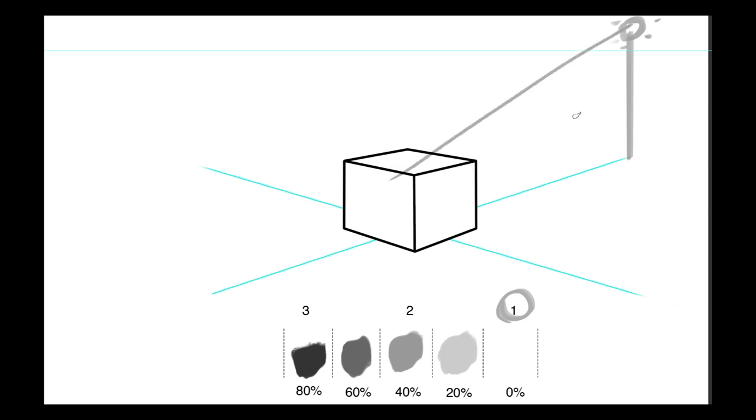A 2 would be a side of the cube, like this one right here, that is running parallel with the light ray. It's not going to receive a direct impact, but it's going to get some light. It's going to be lit just from being in the environment, and that's going to be what's called a midtone. We call that a 2.